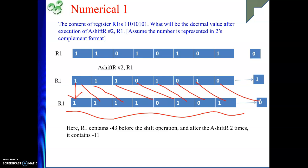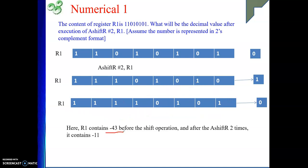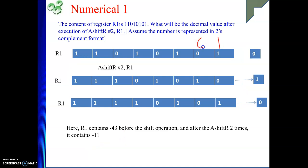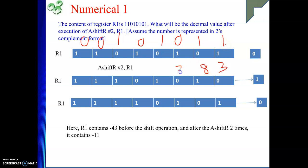Before the operation is applied, R1 was containing minus 43. After the operation is performed two times, it is containing minus 11. Actually, it would be minus 10 point something, so we take the lower integer value. Between minus 10 and minus 11, the lower integer is minus 11. To verify minus 43: it is negative, so take 2's complement — the bits are 1, 0, 1, then 1, 0, 1, 0, 0 — representing 1 plus 2 is 3, then 8, then 32. So 32 plus 8 is 40, plus 3 is 43. Minus 43.